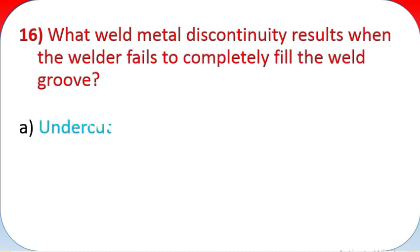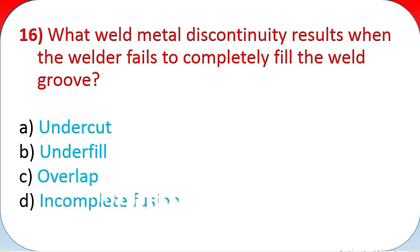Question 16: What weld metal discontinuity results when the welder fails to completely fill the weld groove? A - undercut, B - underfill, C - overlap, D - incomplete fusion, E - none of the above.